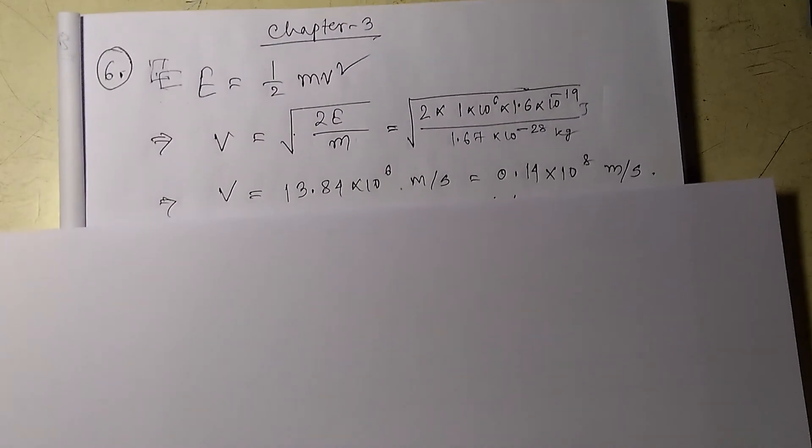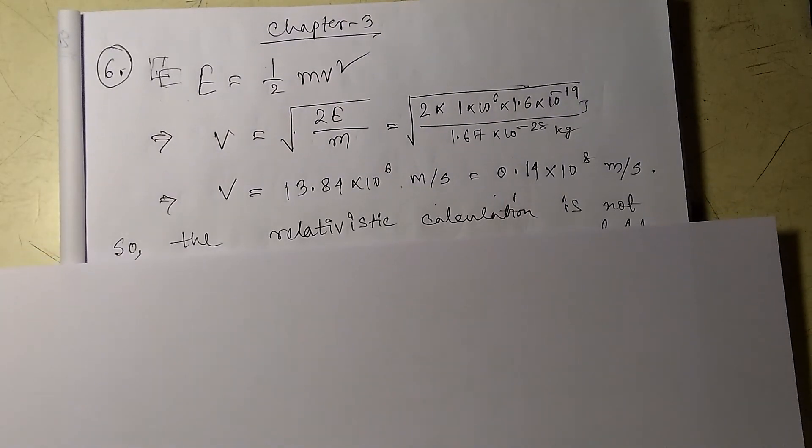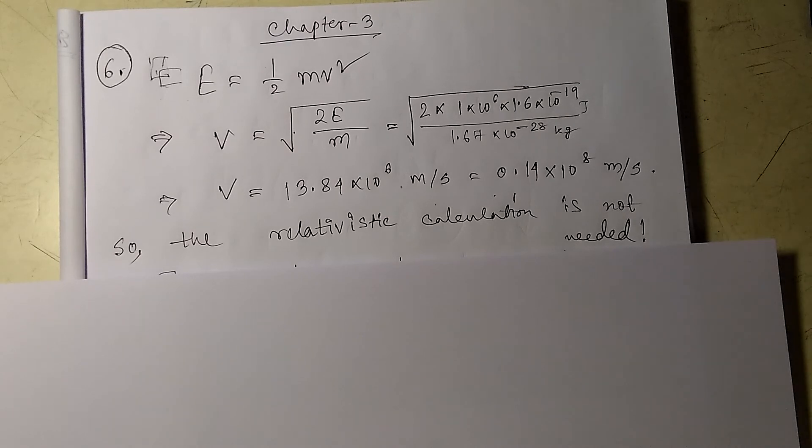So we do not need any relativistic calculation in this case. The relativistic calculation is not needed; you can do it in general. Now, the first part says find the de Broglie wavelength of this 1 mega electron volt proton.